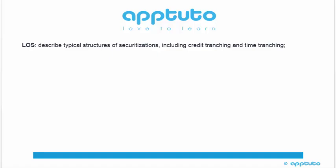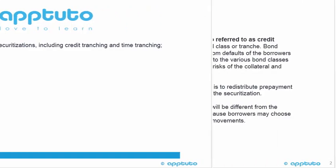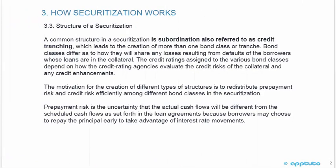This LOS describes typical structures of securitizations including credit tranching and time tranching. Continuing with how securitization works, we're going to look at the structure of securitization. A common structure in a securitization is subordination, also referred to as credit tranching, which leads to the creation of more than one bond class or tranche.